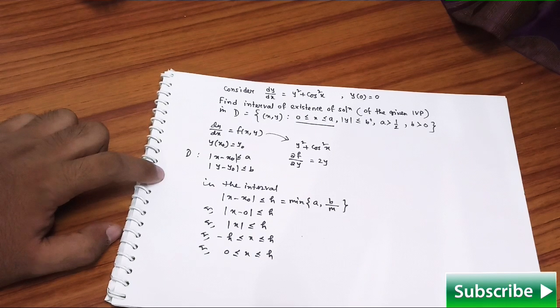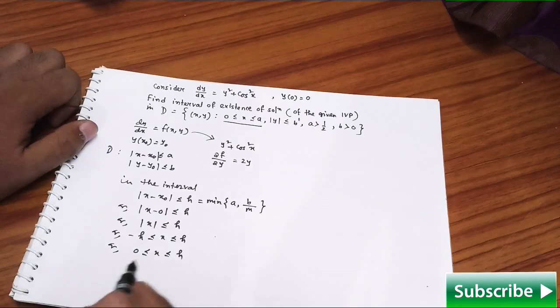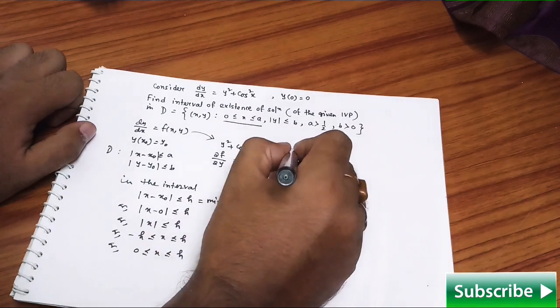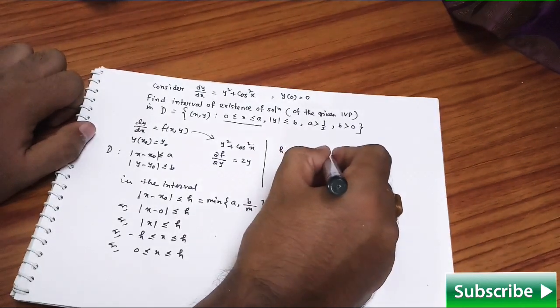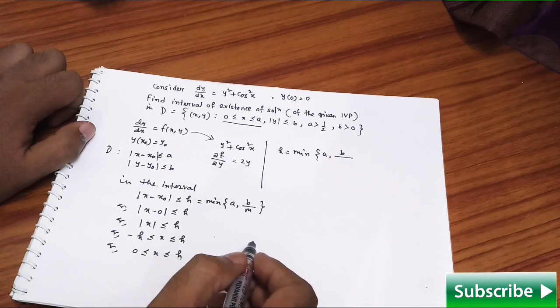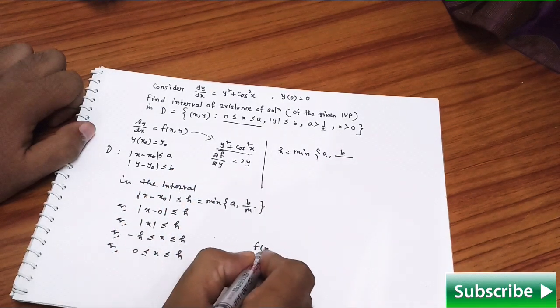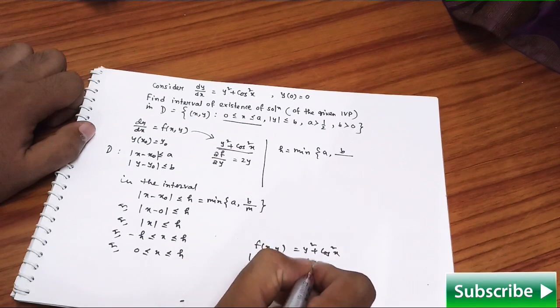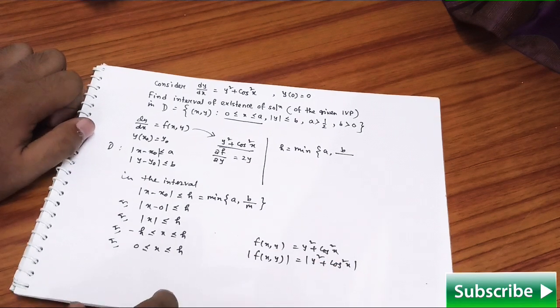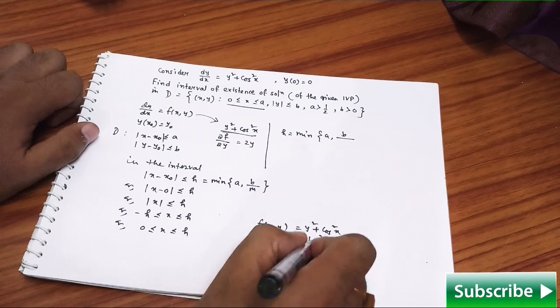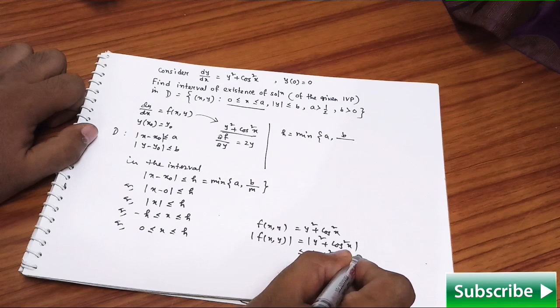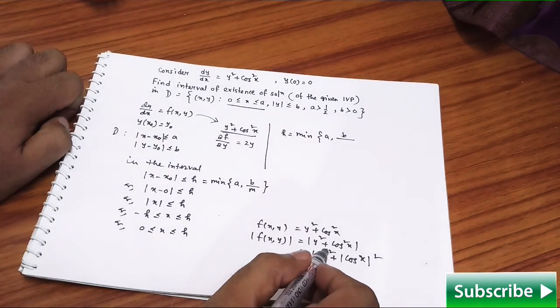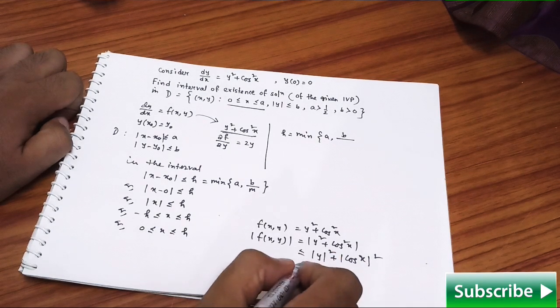Now the only job is to find the value of h. Let's proceed further. For h you need to calculate the minimum of these quantities - minimum of a, b/m. And this m: look at, this was our f, so f(x,y) is y² + cos²x. Simply take the modulus both sides; you will have y². You are already familiar with this kind of treatment - we have used this technique in earlier videos again and again.